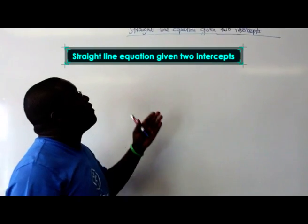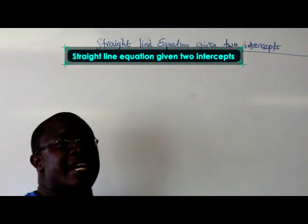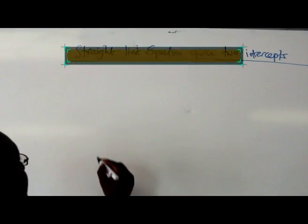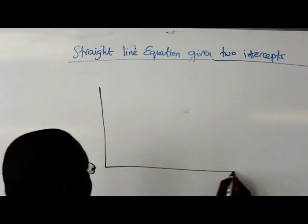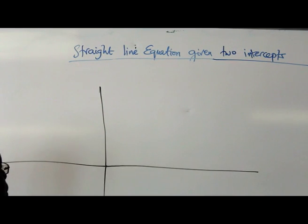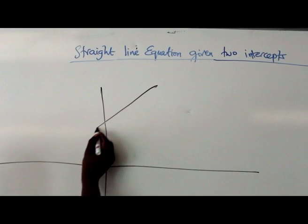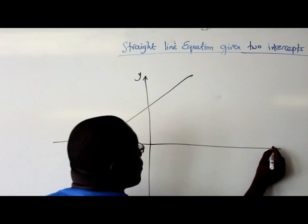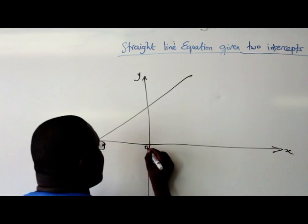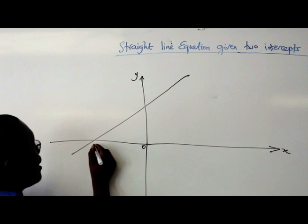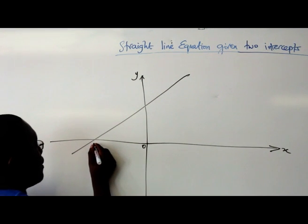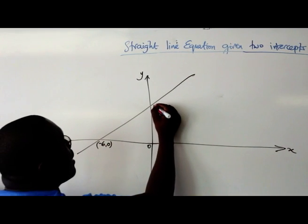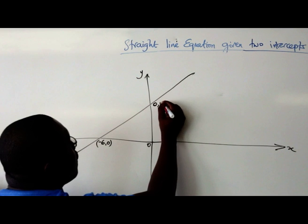Today we're going to be looking at a straight line equation but this time you're given two intercepts. Just to show it diagrammatically, these are your four quadrants but we're going to use that straight line. So this is your y-axis, that's your x-axis on the Cartesian plane and that's your origin. And then here you've got negative 6, 0 and here you've got 0, 4.